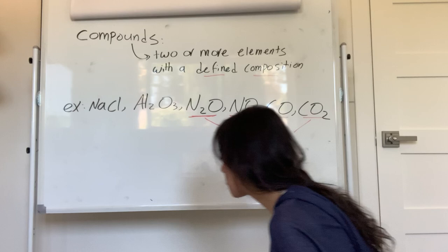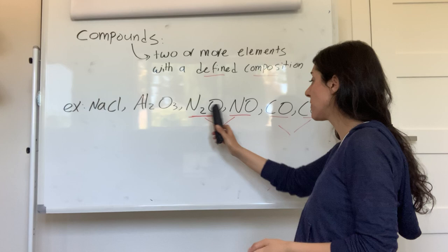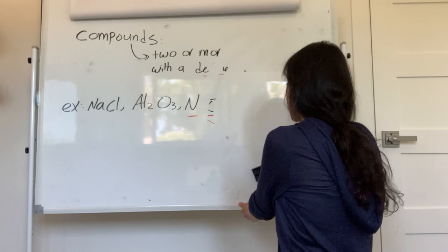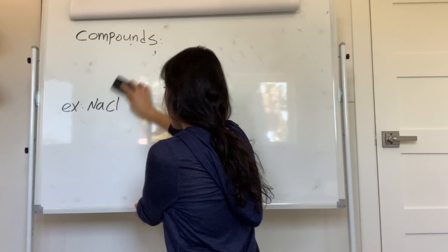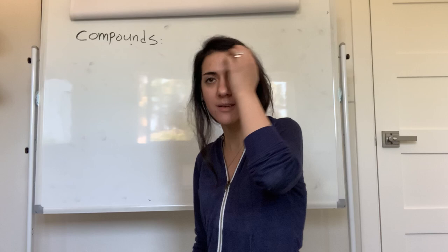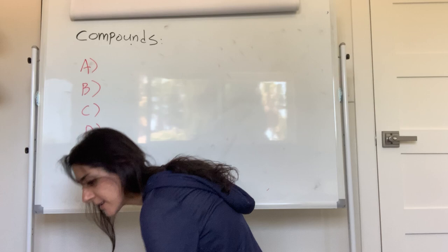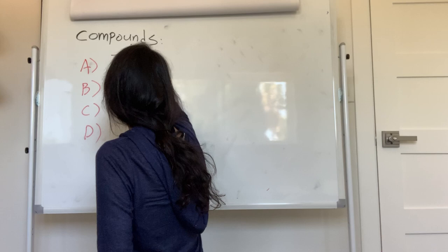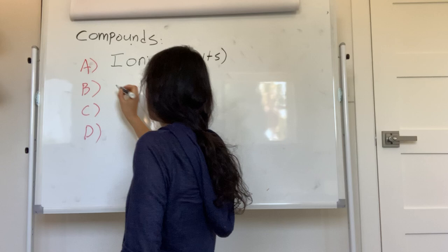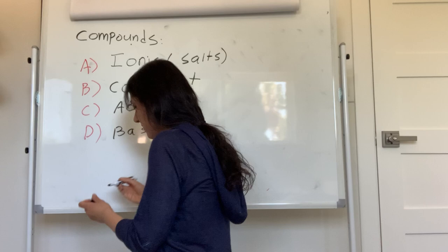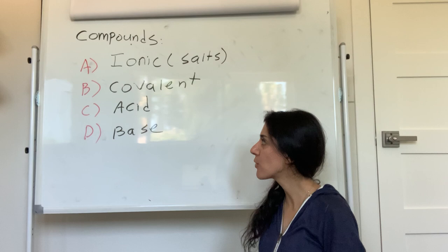So now you know what a compound is — two or more elements with a defined composition, and that composition matters. Whether you have one nitrogen or two, one oxygen or two, it makes a difference. Now I'm going to categorize compounds into four categories: ionic compounds — also called salts, covalent compounds, acids, and bases.